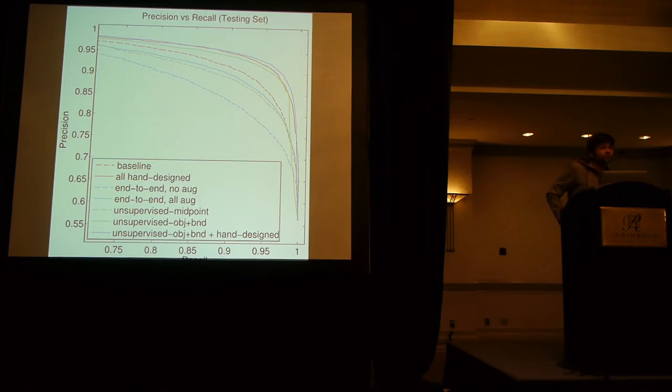Question. Is there a connection between your dynamic pooling and what Pedro Domingos was talking about in which you would sort of optimize where to pool?